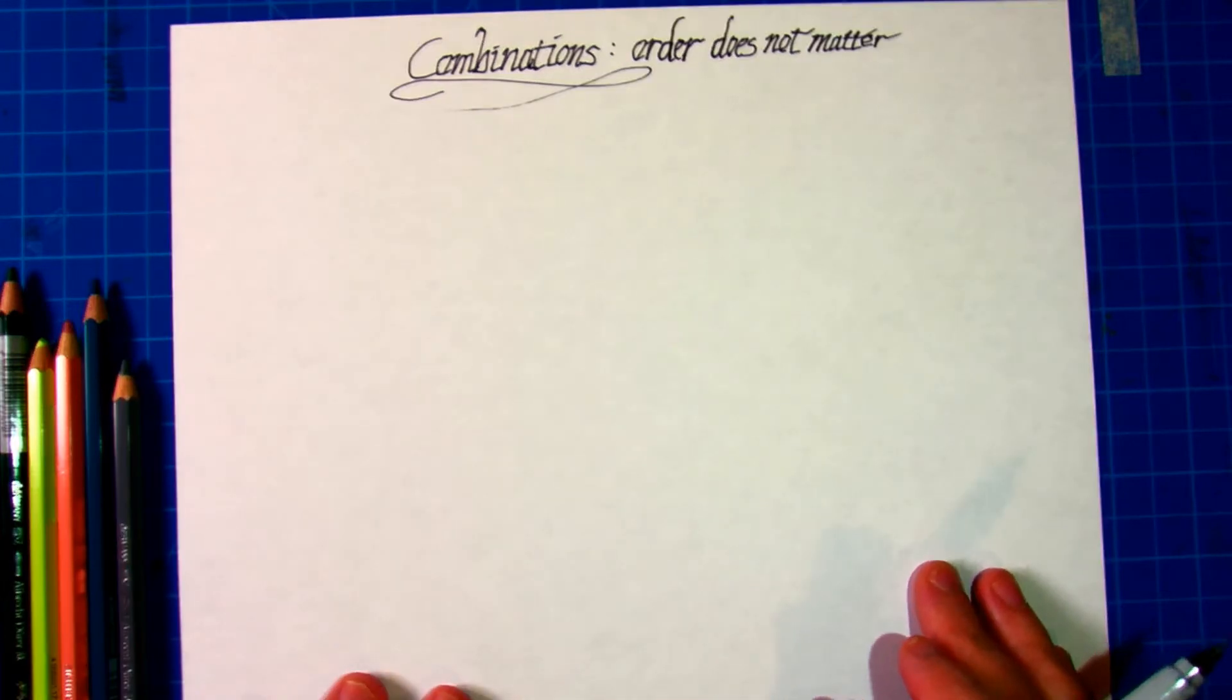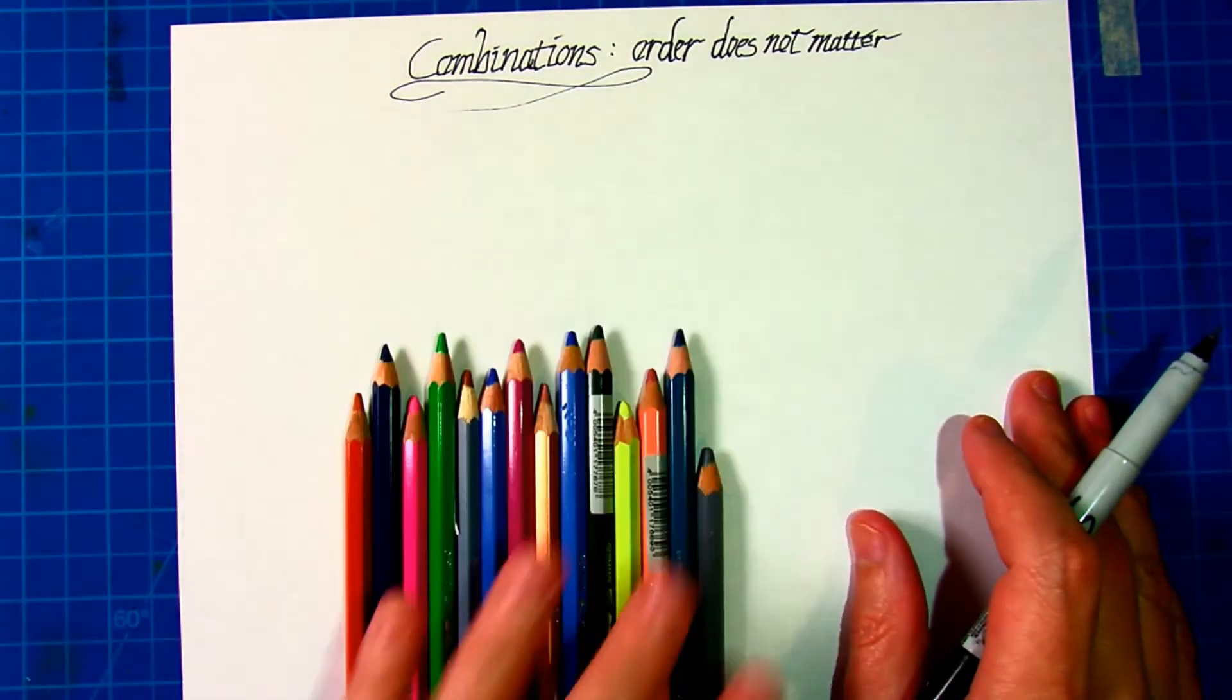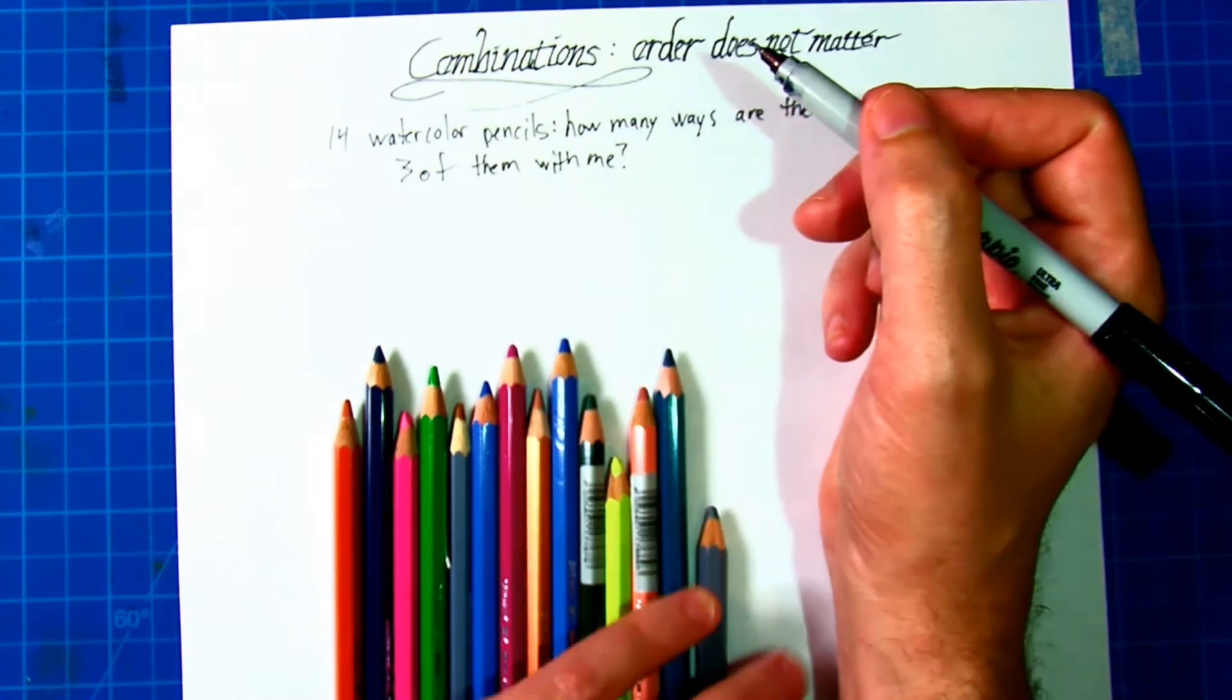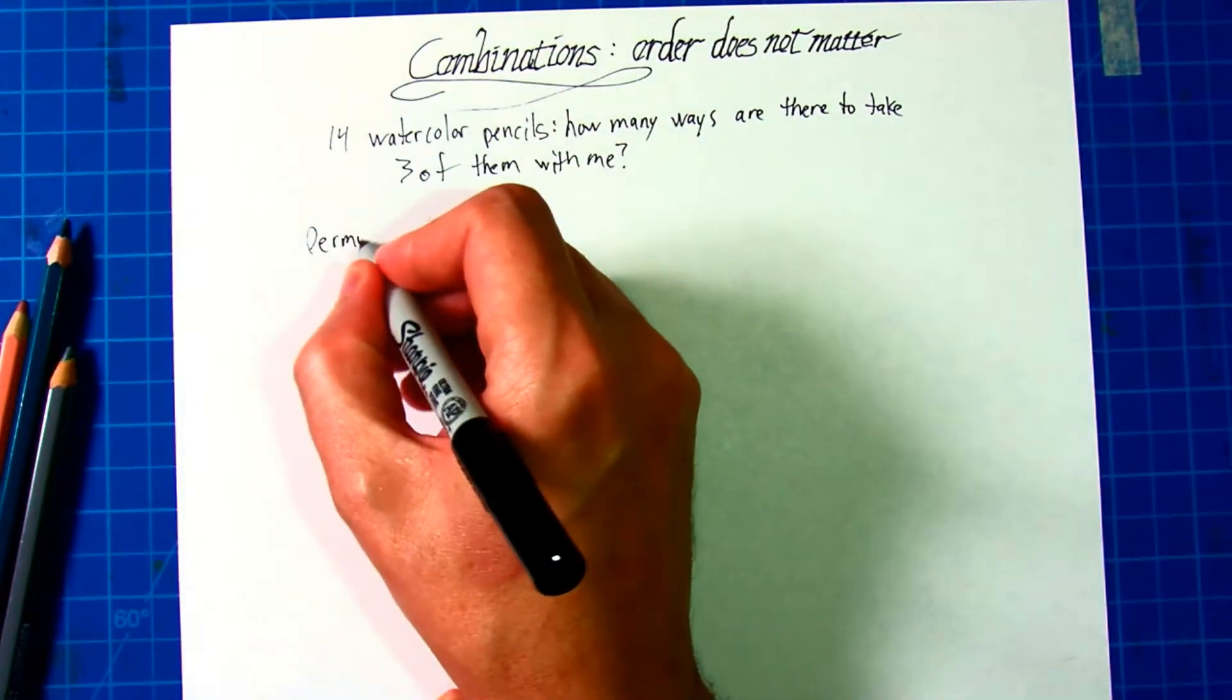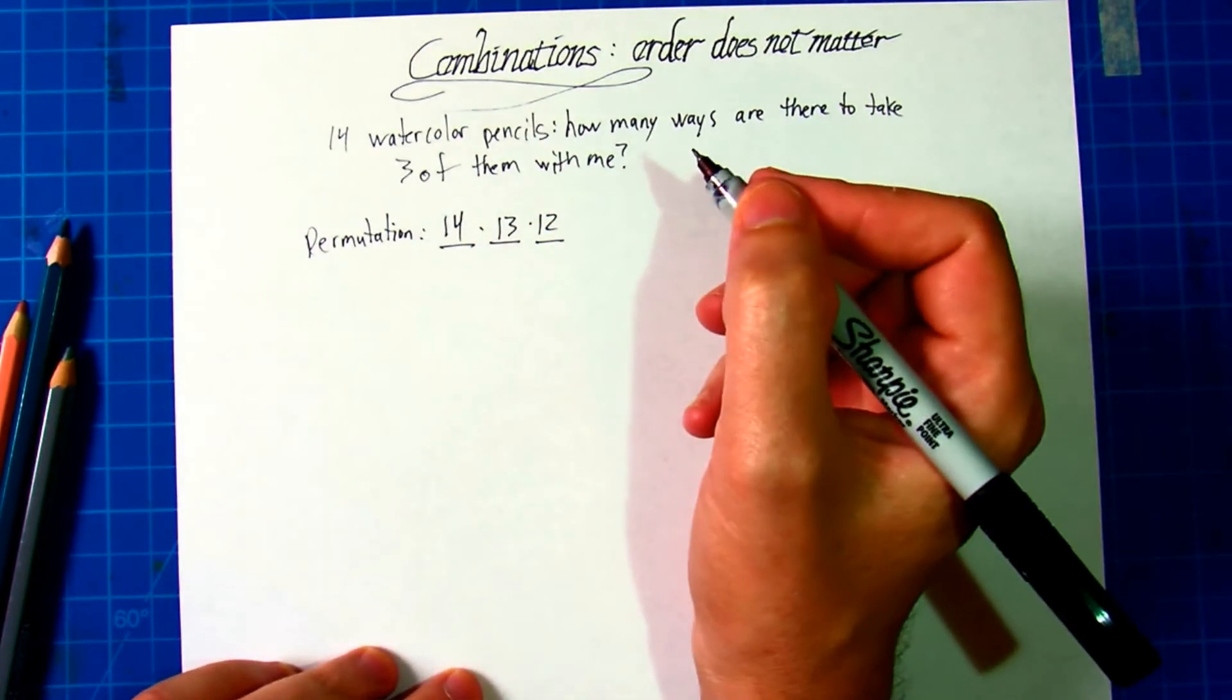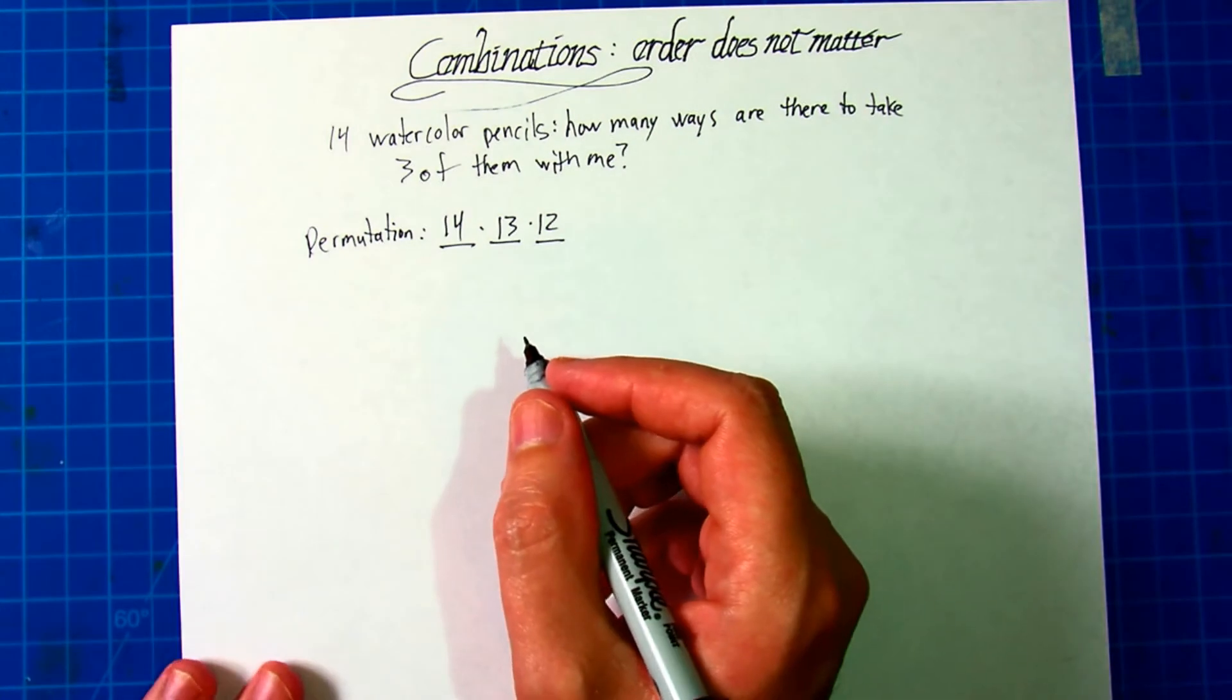Unlike permutations, when you talk about combinations, you're talking about order doesn't matter. So suppose I have 14 watercolor pencils and I want to take three of them with me. If this were a permutation, I'd simply do 14 times 13 times 12, but I'm just throwing three of them in my bag. I don't care which one's first, second, or third.